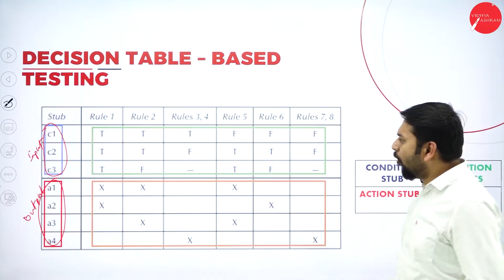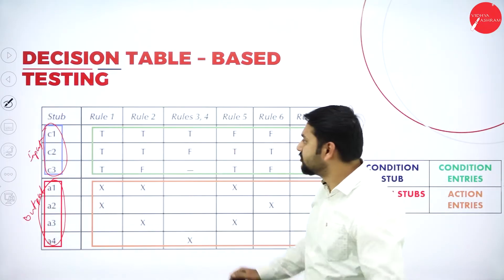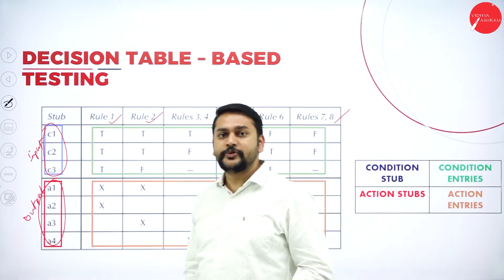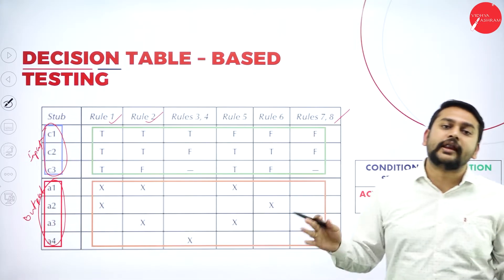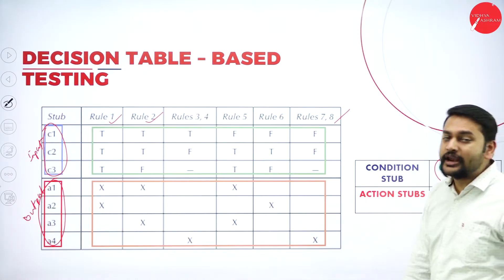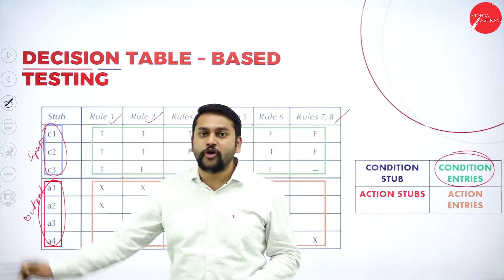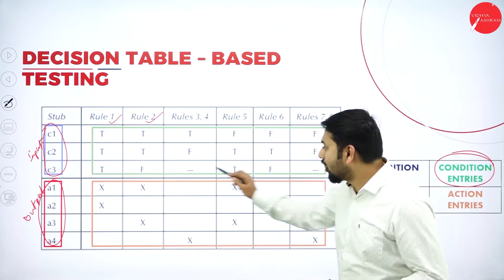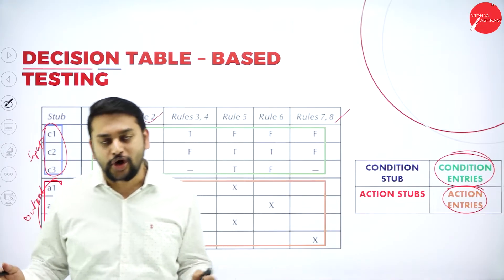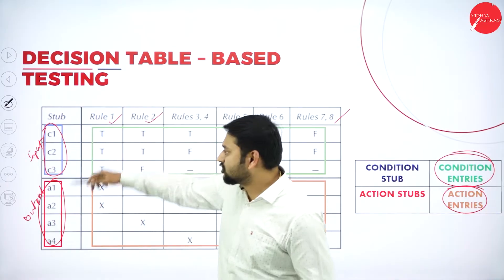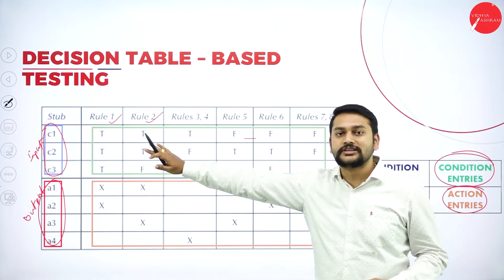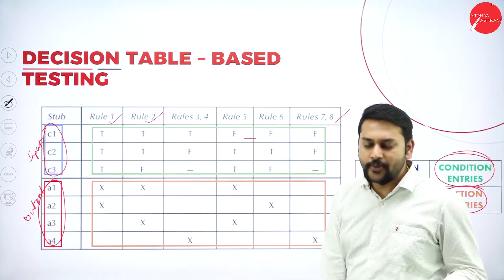Each column in the table represents a rule — rule one to rule n. What is marked in green I will call condition entries — true or false values representing each condition. And the bottom portion I will call action entries. So you have four things to remember: condition stub, action stub, condition entries, and action entries.